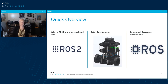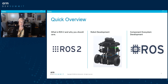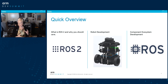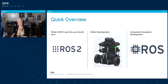Let's give a quick overview of what we're going to talk about. First I'm going to cover what ROS2 is and why you should care about it, what's interesting about it, and how it's changed. Then I'll talk about the robot development process with ROS2, and after that, the component ecosystem — all the parts that may involve ARM components that you use to build a final robot system.